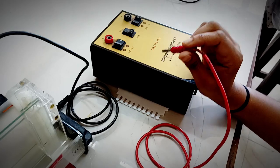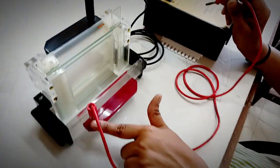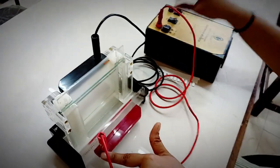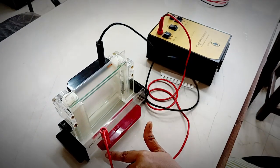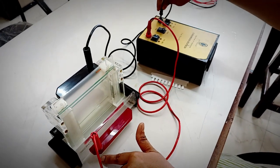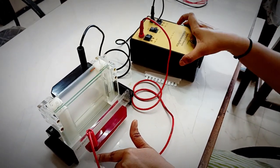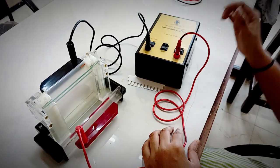This is called the power pack. Now you are going to attach this red electrode to the red electrode and black to black electrode.